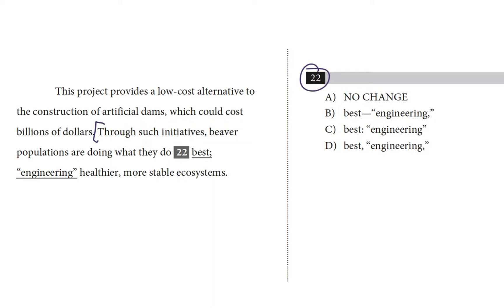Let's figure out what kind of question this is. Our choices are all different kinds of punctuation - no change is this semicolon, b is this em dash, c is a colon, and d is a comma. So that means we're looking at a punctuation question.